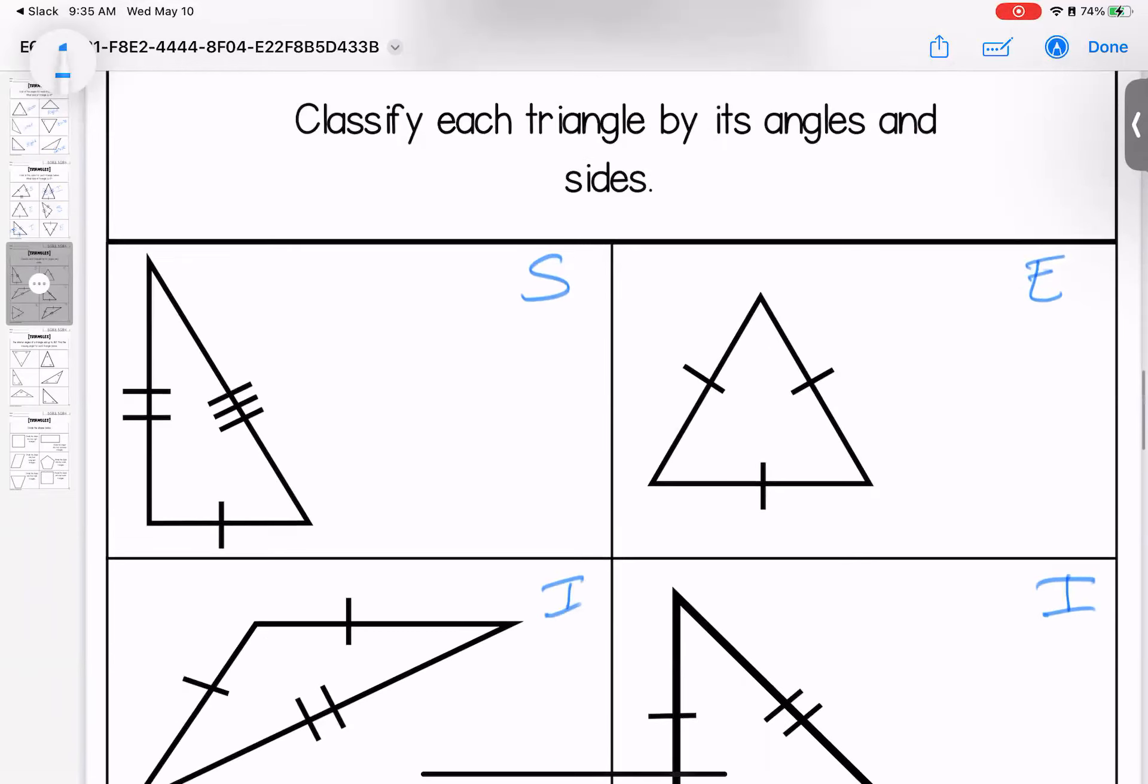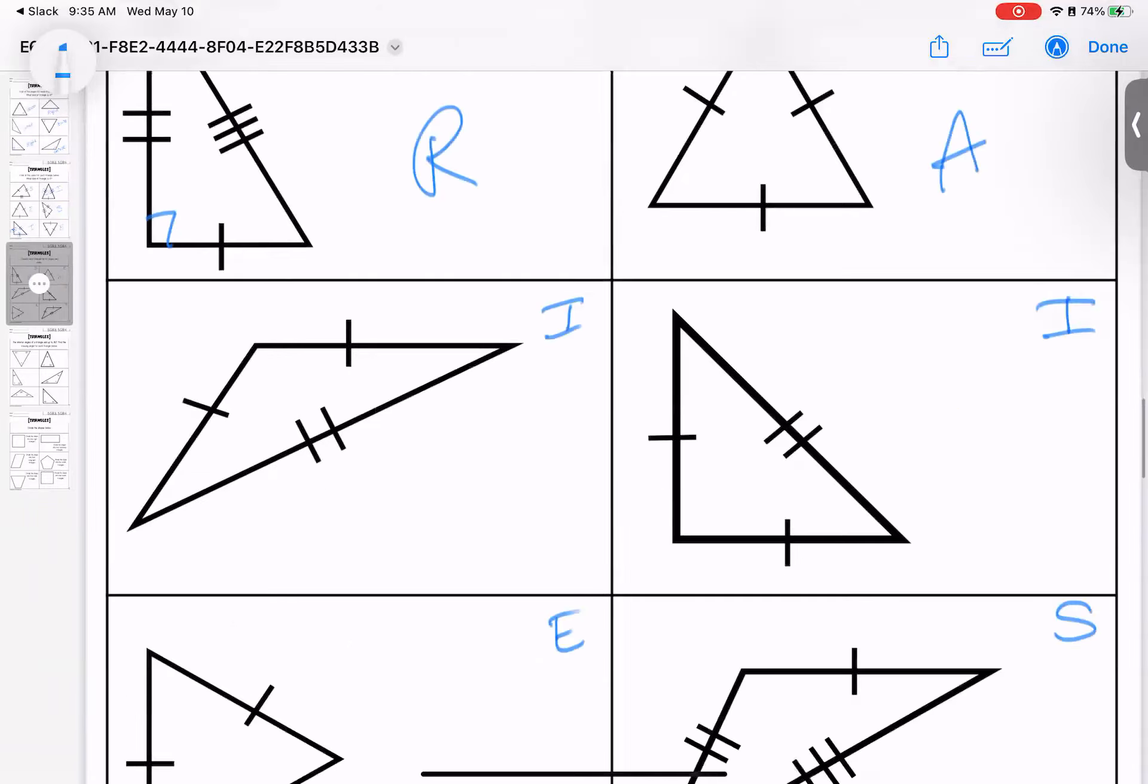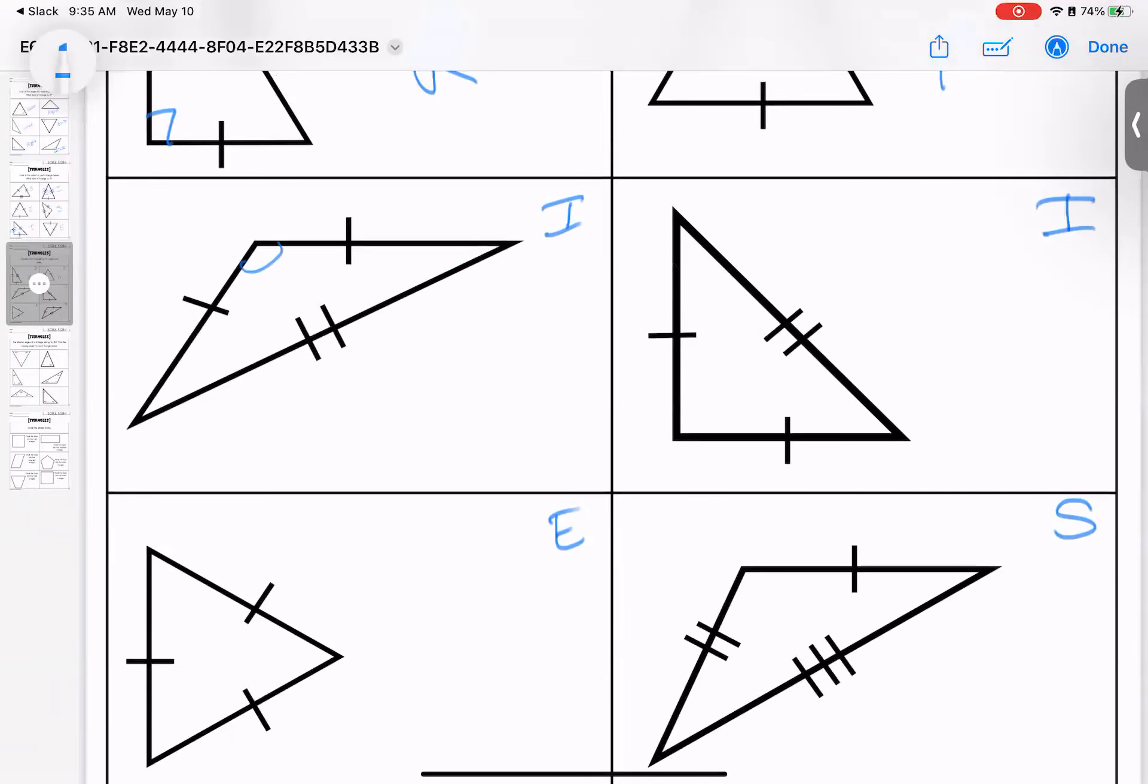Now let's go back and look at angles. I have one right angle. So it's a right triangle. These are all acute. So it's an acute triangle. One obtuse, right.